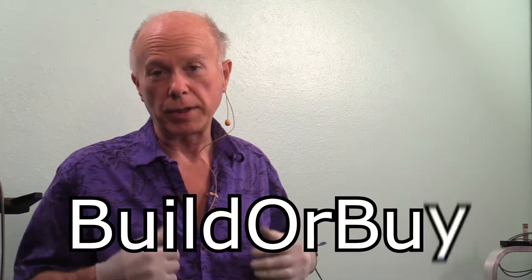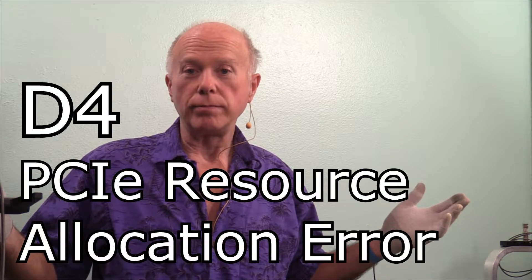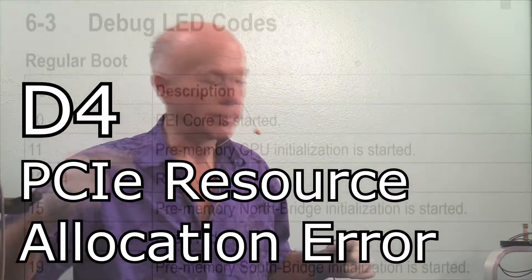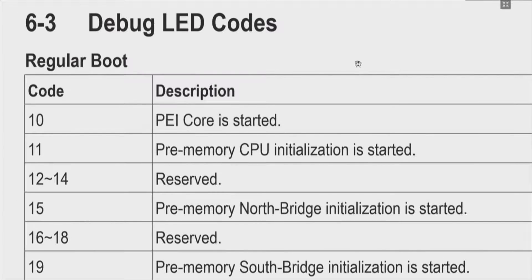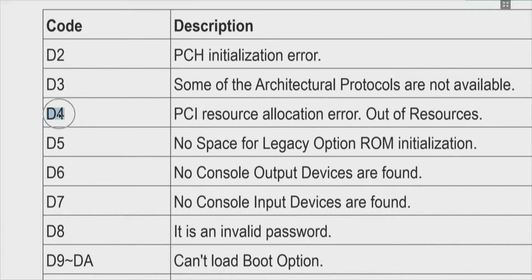This is BuilderBuy. My name is Gil Boyd - thank you for joining us. This is about solving the D4 out of PCI Express Resources. If we look at the manual, we've got a list in the appendix of the debug LED codes, and the code we're looking for is the D4. The D4 error is PCI Express Resource Allocation error - out of resources.